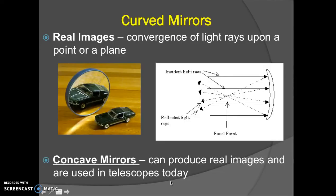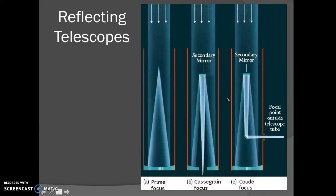In astronomy we use curved mirrors. We use concave mirrors. Concave mirrors allow light to come in, reflect off, and focus at a focal point, which is very convenient for us. So curved mirrors are used for reflecting telescopes.